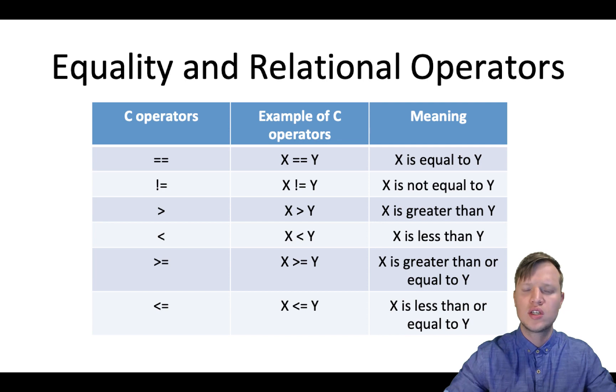If we have a look at equality and relational operators the first one is is equal. So this must not be confused with a single equal sign. Let's say for instance if we say x is equal to y with one equal sign, then x becomes y or the value of y will be stored into x. With equality operators it's a double equal sign. So we say x double equal y and this is used to compare if the value of x is equal to the value of y and the result will be either true or false.